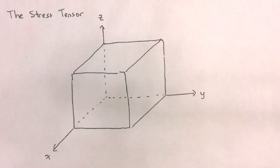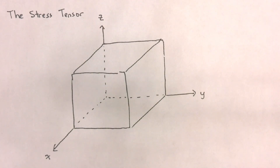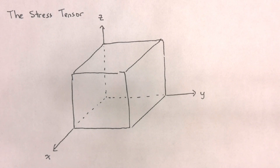In this video, we will start our differential conservation of momentum analysis by introducing the stress tensor. In three-dimensional space, there are nine stress components that act at a particular point in a fluid flow. These components form the stress tensor.